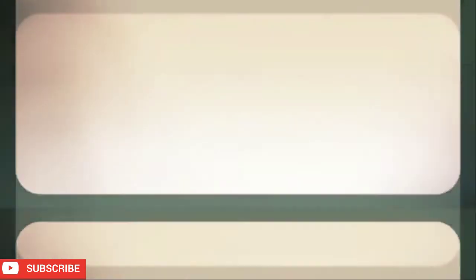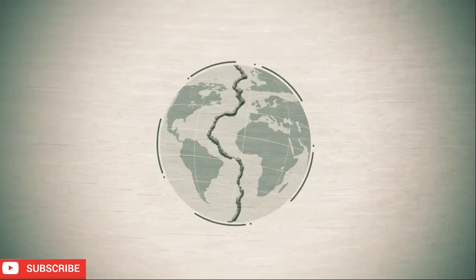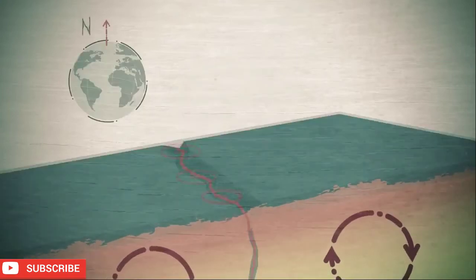Perhaps the most dramatic evidence came from the magnetism of rocks each side of the mid-ocean ridges. When rocks solidify they become weakly magnetic in the direction of the earth's magnetic field. However every few million years the earth's magnetic field flips so the north magnetic pole becomes south pole and vice versa and this change is signaled in the rocks.